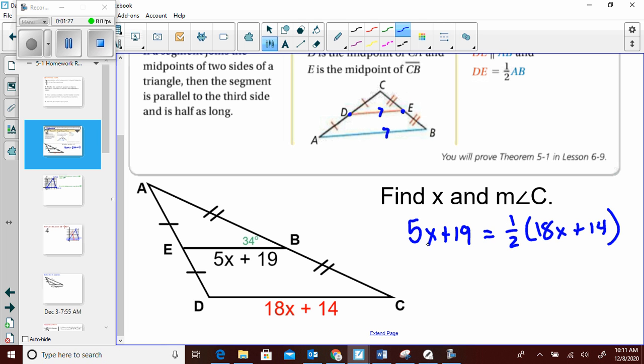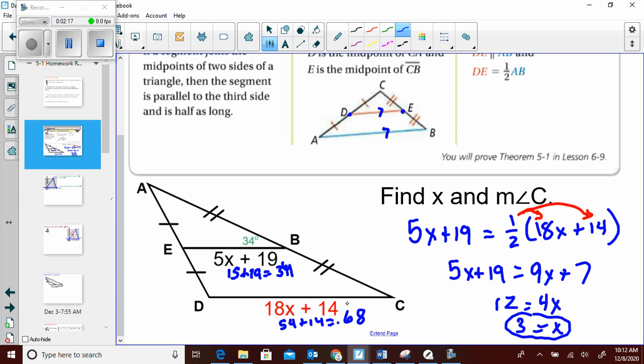You have the choice. You can multiply by 2 over here, or since these are both even, I'm just going to distribute the one half. So I'm going to take it here and here. 5x plus 19 equals 9x plus 7. Bring this over. 4x is 12. x is 3. If I look at that, that gives me 15 plus 19, which is 34, and that gives me 54 plus 14, 68. 34 is half of 68.